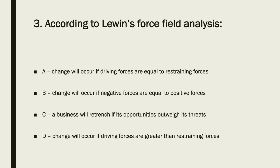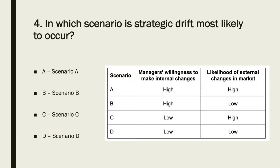Another model here: Lewin's force field analysis. In which scenario is strategic drift most likely to occur? It's more likely when managers aren't willing to make internal changes, so C or D, having low resistance to internal change. You are most likely to get strategic drift when very likely external changes are happening in your market. Therefore the answer is low internal change resistance and high external change — the answer is C.